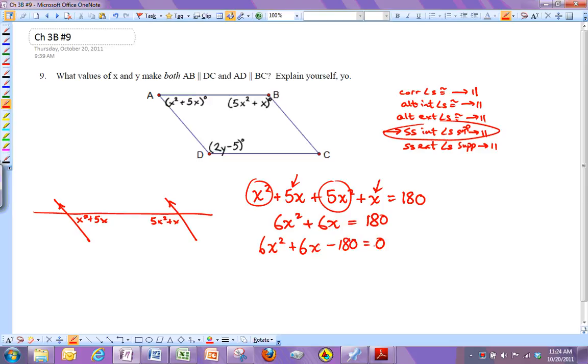And then some people try to factor this. What I would probably do is everything's divisible by 6, so I'm going to divide both sides by 6. And if I do that, I get x squared plus x minus 30 equals zero.